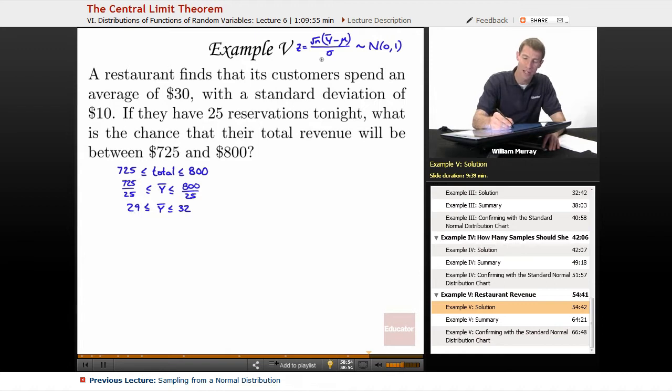So what I'd like to do is build up that standard normal variable. Y bar minus mu would be between, my mu is my global average, that's the $30, that's how much customers spend on the average in the long term. So that's $29 minus $30 and $32 minus $30. And let me go ahead and divide by sigma. Divide all of these by sigma. My sigma is the standard deviation, it's $10 right there. And I also need to multiply by the square root of n. I'll give myself another line there.